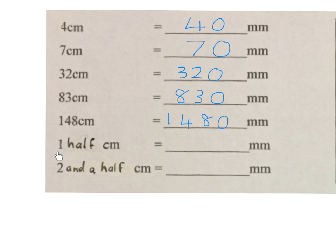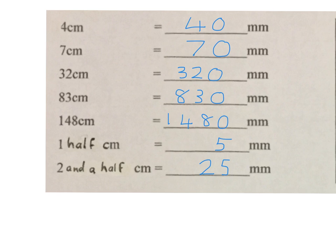Now fractions start coming in. By grade 4 you should know what a half is. A half centimeter is half of 10, which means 5 millimeters. Here it's asking 2 and a half centimeters — that's 2 centimeters (which is 20) plus the half (which is 5), put them together: 25 millimeters. It's very important while doing these conversions to keep your units lined up underneath each other and get a feeling for the relationship of 10.